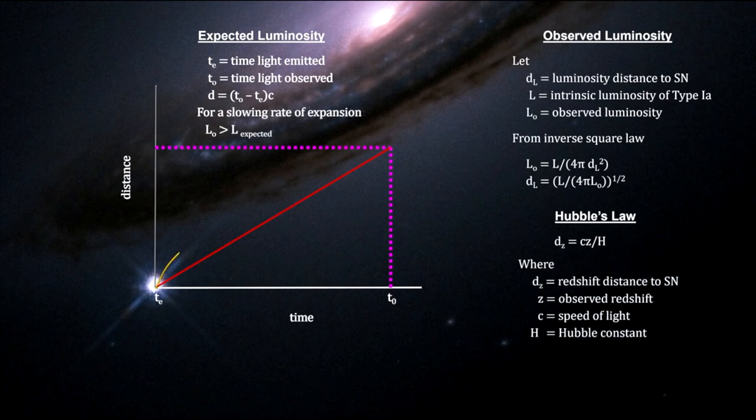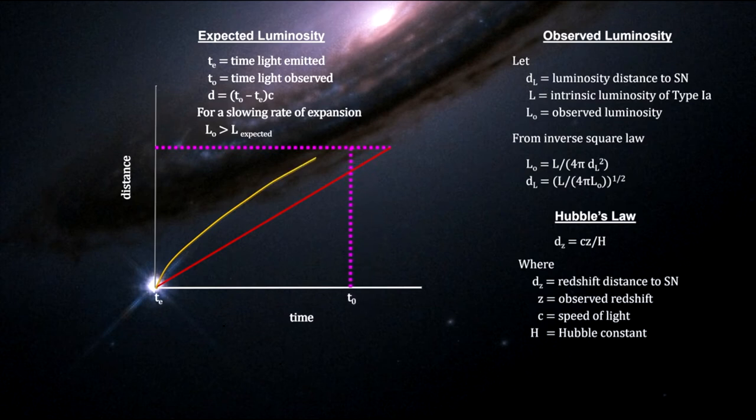But if the expansion is slowing down, the expansion rate in the past would have been greater than what we see now, which means it would have taken a shorter time to expand from its size at light emission time to its present distance, compared to a non-accelerating universe. This would result in a shorter light traveled time, shorter distance traveled, and a brighter observed supernova, compared to a non-accelerating universe.